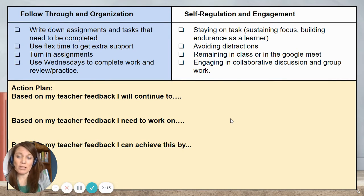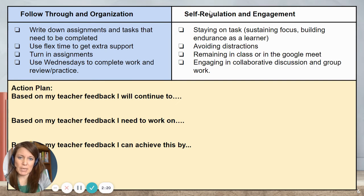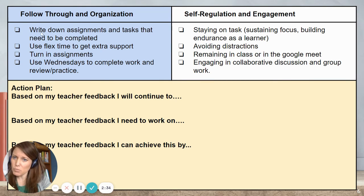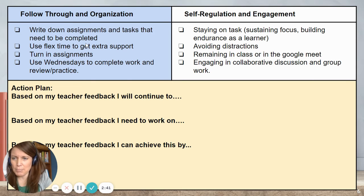Finally, you'll go back and look at all the feedback together and reflect on your action plan. These are some suggested behaviors or routines that independent learners engage in — follow through, organization, self-regulation, and engagement. You would highlight any of these areas that you think are areas of strength for you. For example, if you write down your assignments and tasks that need to be completed, go ahead and highlight that, or add a check mark. If you use flex time to get extra support, go ahead and highlight that.